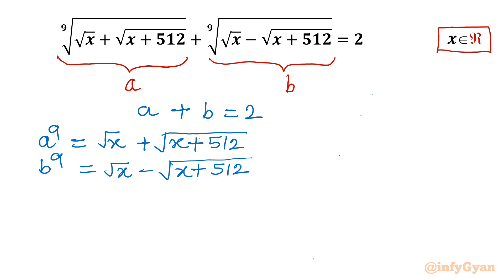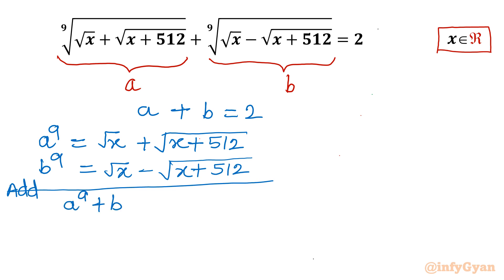Now I will add both equations. So I will have a⁹ plus b⁹ equals the +√(x+512) and −√(x+512) cancel out, leaving 2√x.